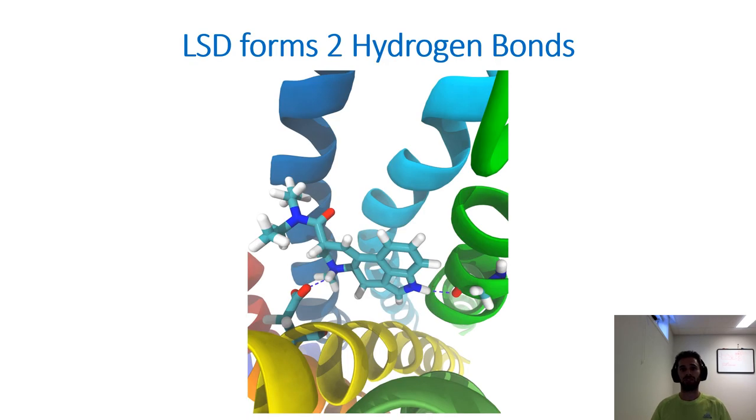You might be wondering now, how do drugs and receptors interact in such a way that a drug gets held inside of a receptor? Because in reality, that is what happens. There's a special type of bond that occurs between LSD and the receptor. This amino acid right here is called glycine. What happens is this bond called a hydrogen bond forms between the white hydrogen and the red oxygen.